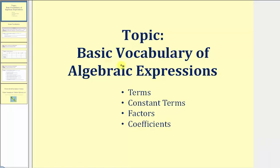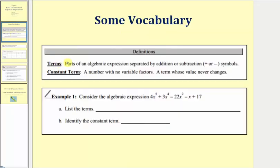Welcome to a lesson on the basic vocabulary of algebraic expressions. We'll begin by defining terms and constant term. Terms are parts of an algebraic expression separated by addition or subtraction symbols. The terms are going to be positive when we have addition, and negative when we have subtraction. The constant term is a term or number with no variable factors — a term whose value never changes.